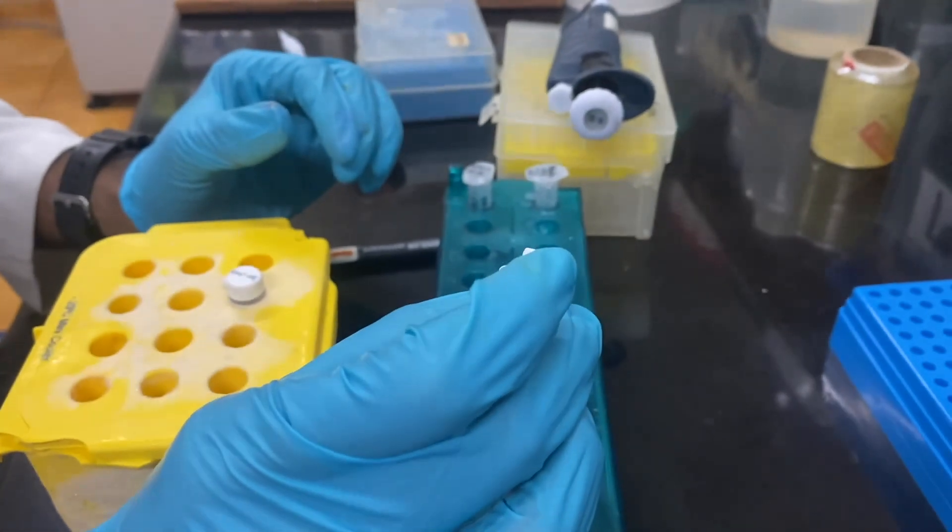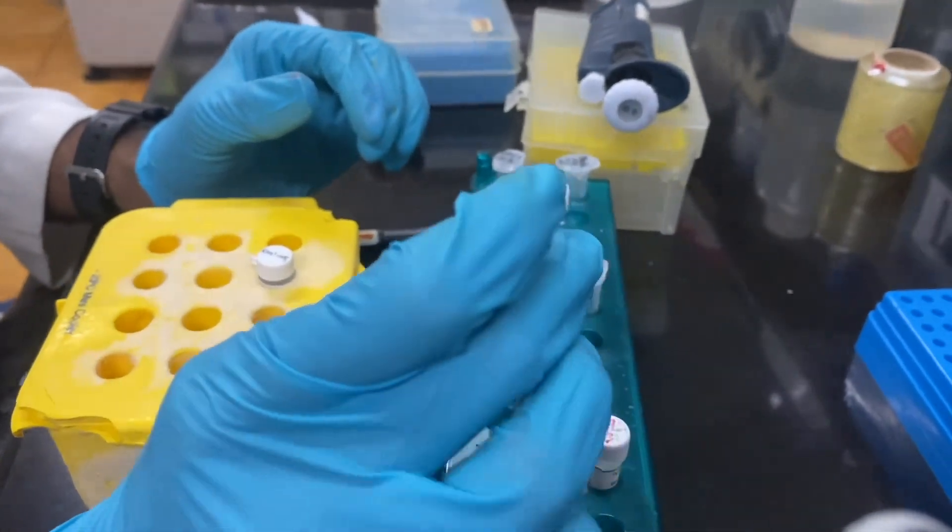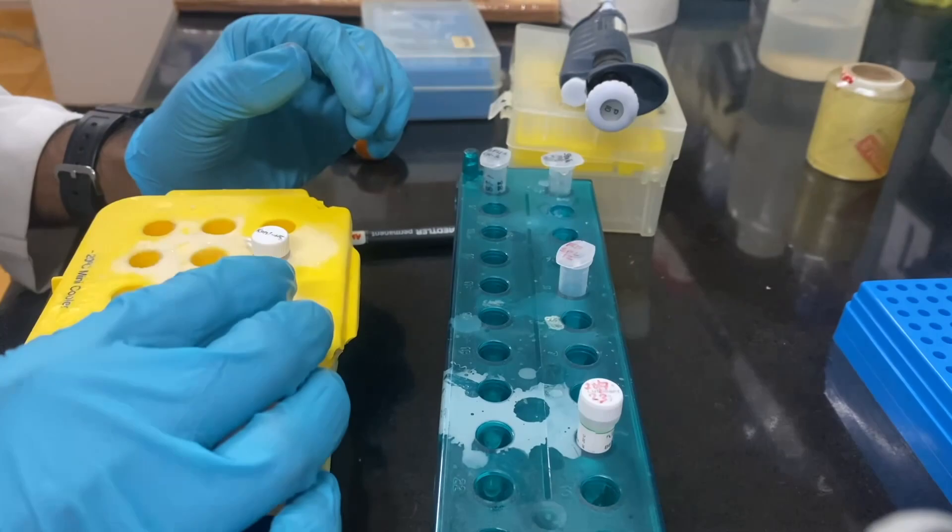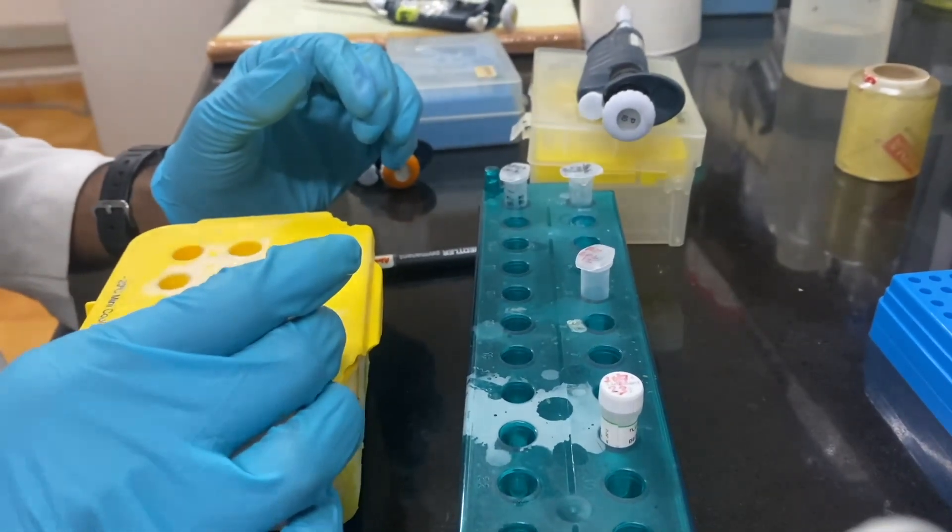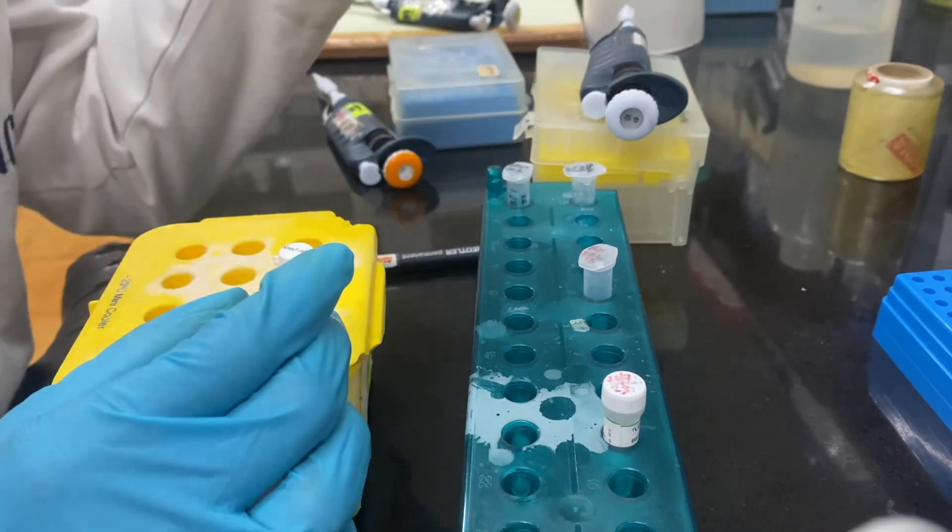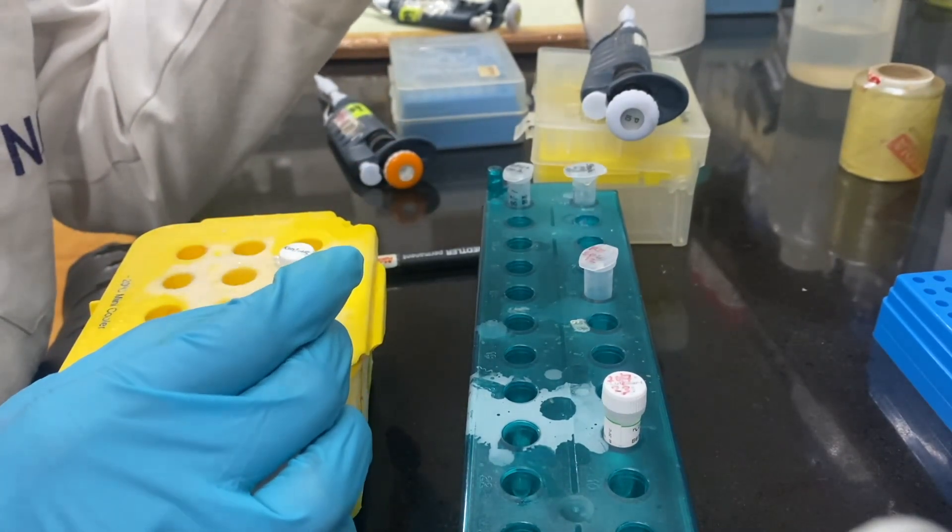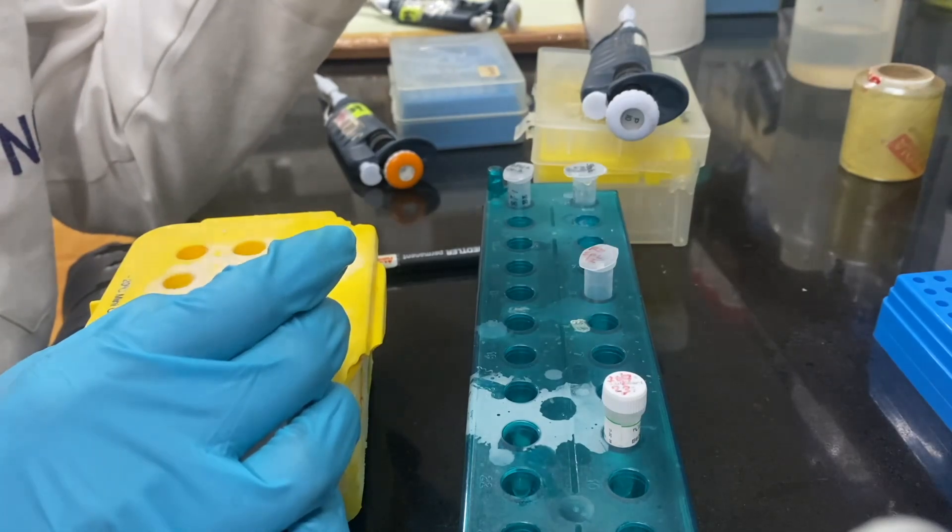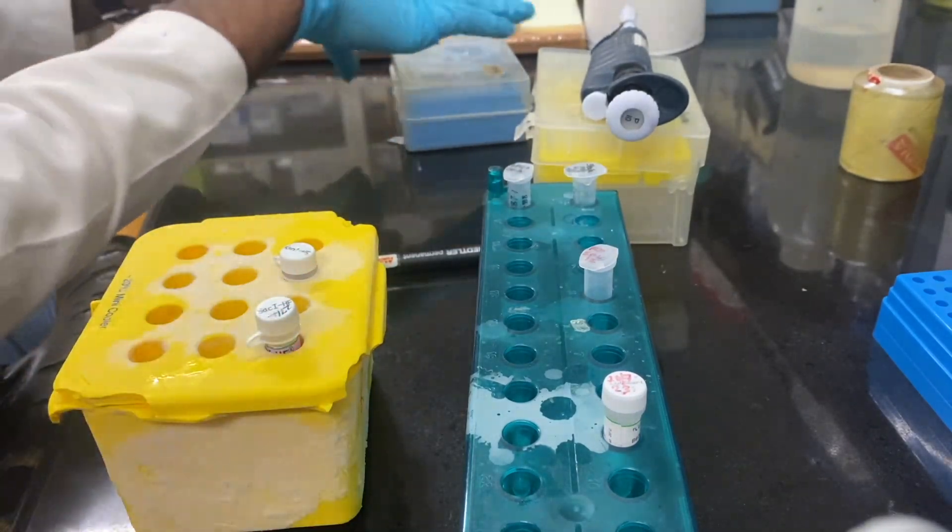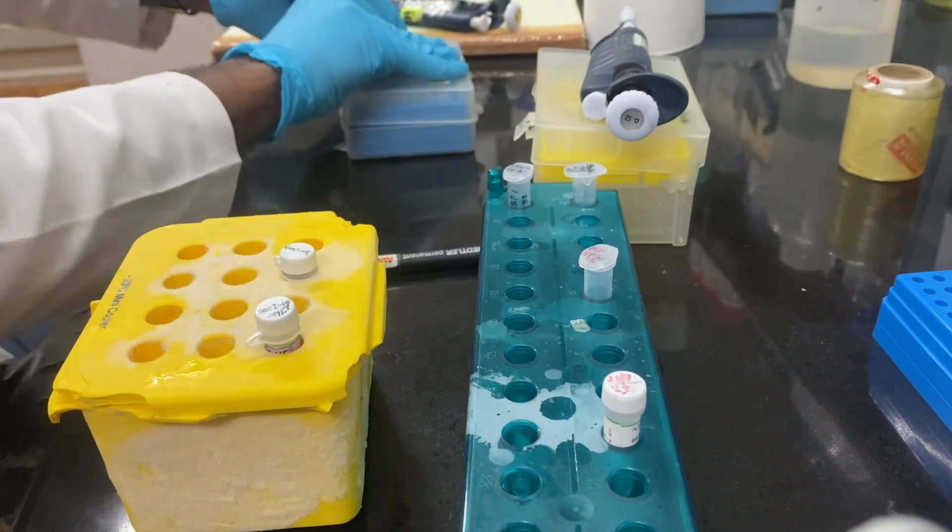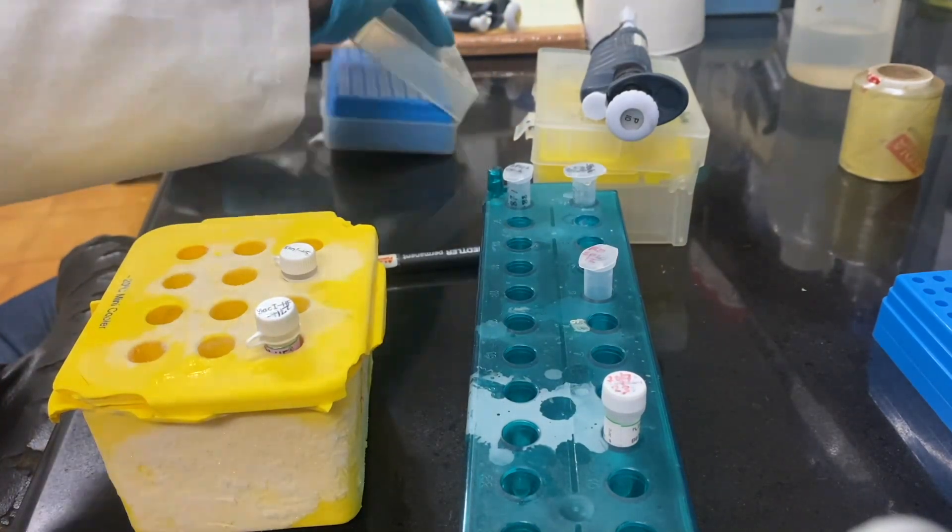This is 20,000 units per ml. So in one microliter it will be around 20 units. In this reaction we are going to add only 5 units to digest within one hour. For adding 5 units I need to add 0.25 microliter of Sac1 and KPN1.